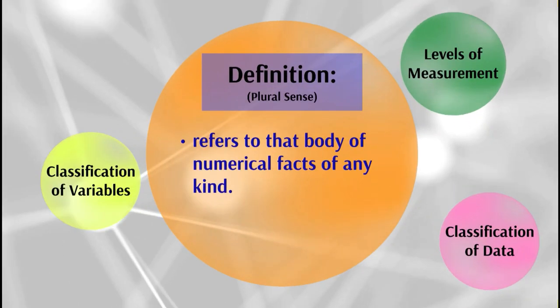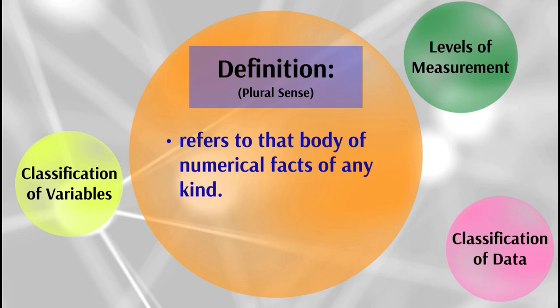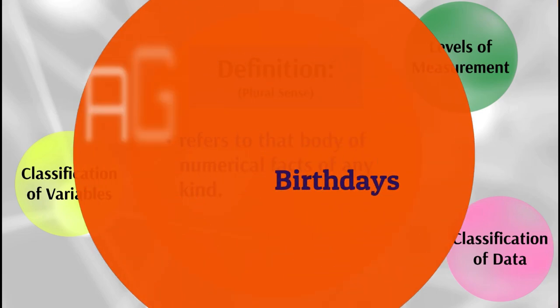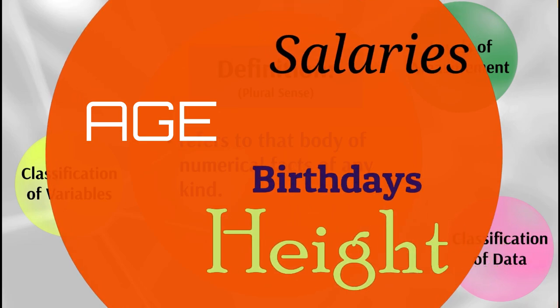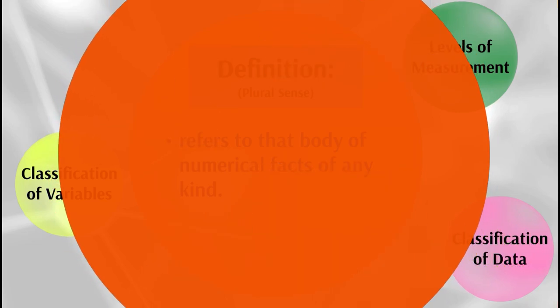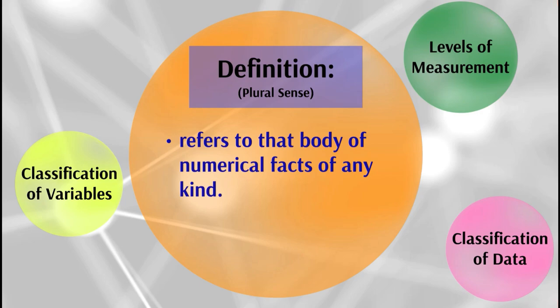Statistics in plural sense is a set of numerical data. For instance, birthdays, ages, heights, salaries, monthly sales of a company, or even the vital statistics in a beauty contest. Under the set of data we have three sub-branches.